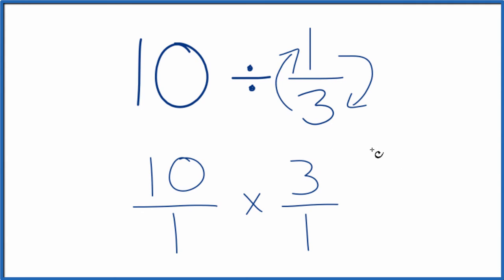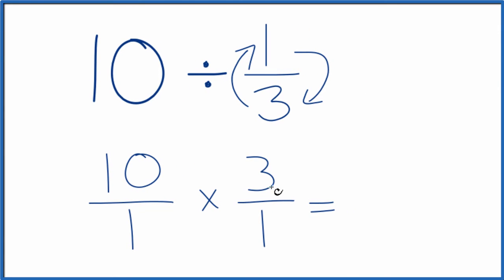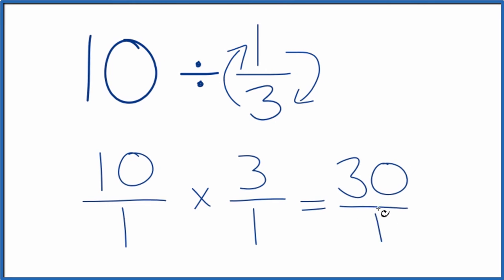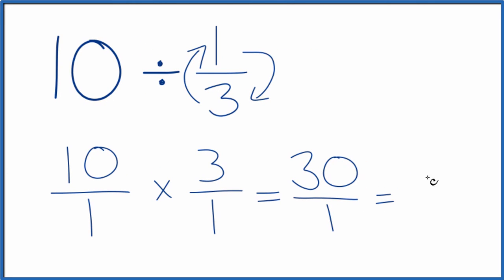Now when we're multiplying fractions, we multiply the numerators, then the denominators. That gives us our answer. 10 times 3 is 30. 1 times 1 is 1. 30 divided by 1 is just 30.